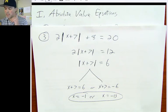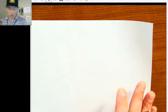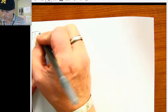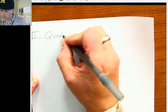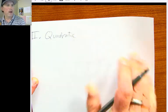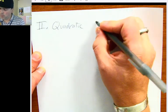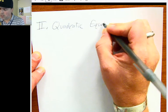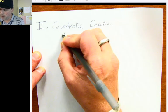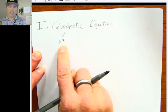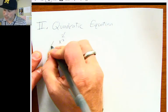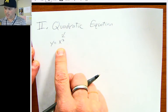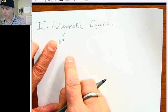And that, students, is how you solve absolute value equations. If you have any questions, we can talk about it first thing tomorrow in class. Part two of today's lesson is quadratic equations. Don't be intimidated by the word quadratic — when you see quadratics, it usually means equations that have an x squared in them.